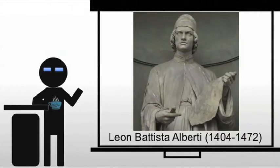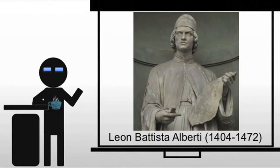Alberti was one of the first to really study Vitruvius' essays on architecture. Vitruvius is a Roman who had written essays on architecture, getting at the idea of proportion. That's where we get the idea of Vitruvian man from when we get to Leonardo. But at the time, Vitruvius had only just been rediscovered, turning up again in Western Europe.